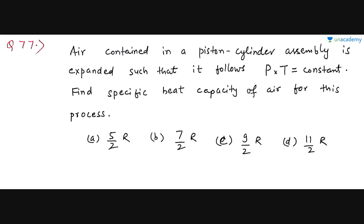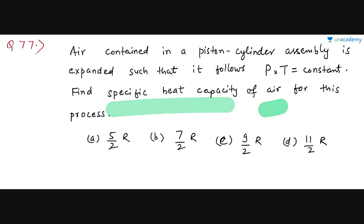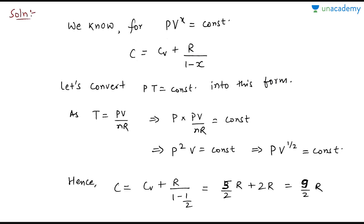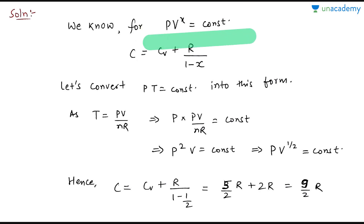This type of question has appeared in NEET two or three years ago, so I have modified it slightly. The question says there is a piston cylinder assembly where expansion occurs such that P × T = constant. For any process where PV^x = constant, the specific heat capacity is C = Cv + R/(1−x). You should remember this formula by heart.